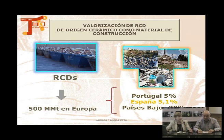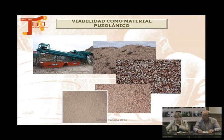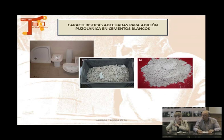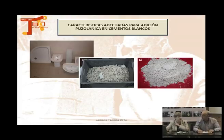En los Países Bajos se recicla mucho, mientras que en España todavía reciclamos poco, así que tenemos que hacer un esfuerzo, todos vosotros también, por reciclar y que los productos no vayan a vertedero. Vemos como ese material de demolición, un material sucio, al final conseguimos un material limpio y homogéneo con el que utilizamos para hacer hormigones. Otro producto que también podemos utilizar son los residuos de saneamiento: cuando quitamos un lavabo o una ducha, ese material se comporta como una puzolana.